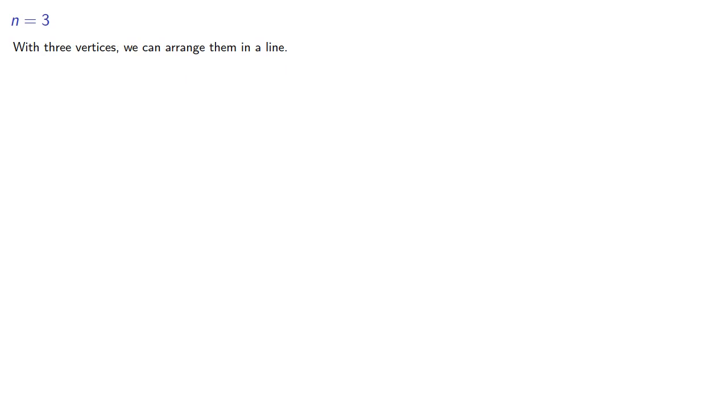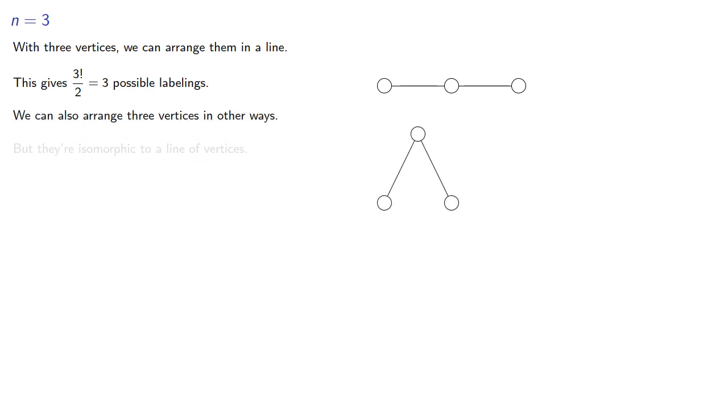With three vertices, we can arrange them in a line. This gives us three possible labelings. We can also arrange three vertices in other ways, but they're isomorphic to a line of vertices. So these don't represent new graphs, and they don't give us new labelings.